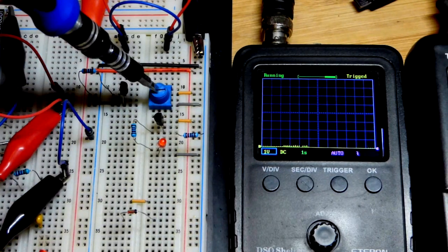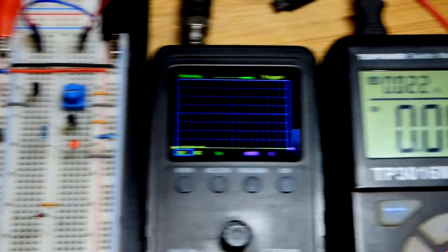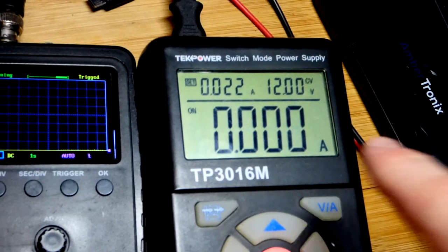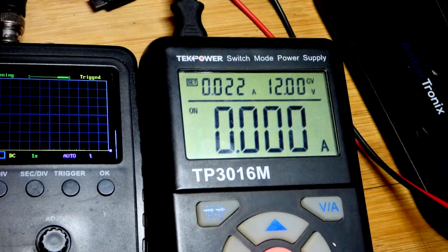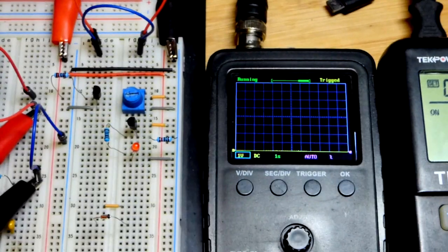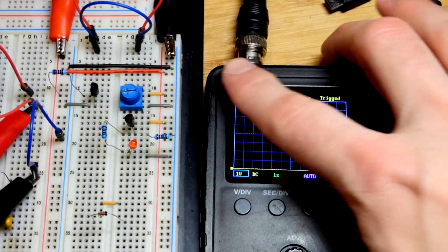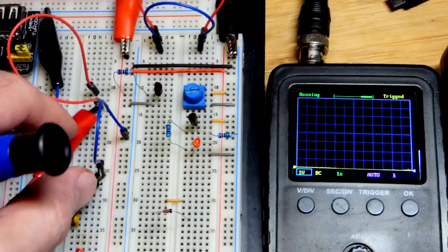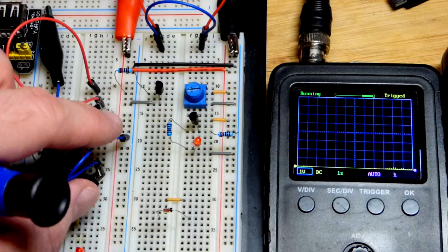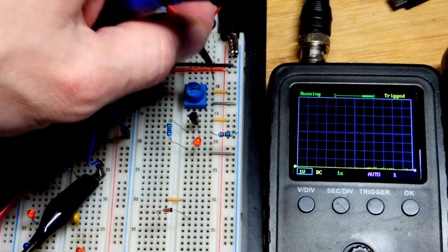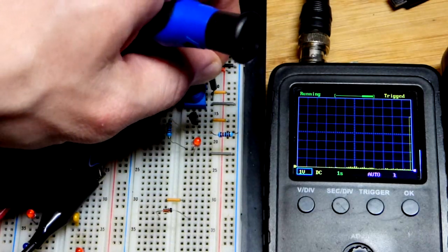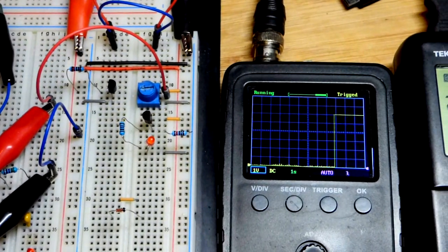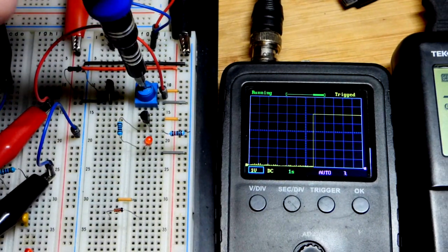In earlier videos we looked at how the trim pot can output a fraction of the power supply voltage. We're going to use 12 volts, and I have my pocket oscilloscope here. The cable comes out to these alligator clips which I clip to these jumpers so I can move them around pretty easily.